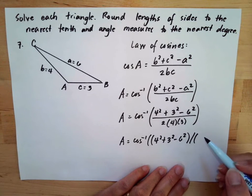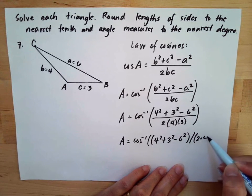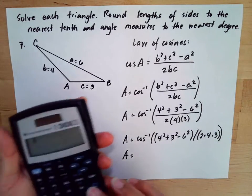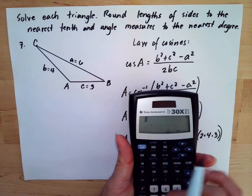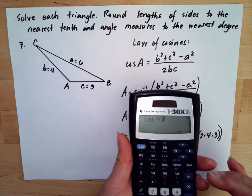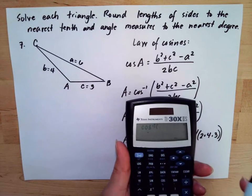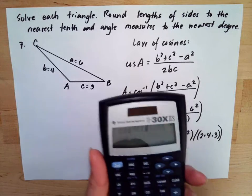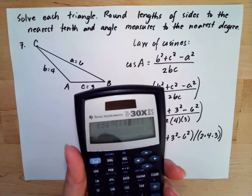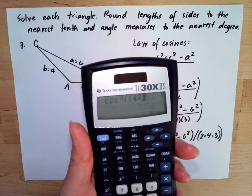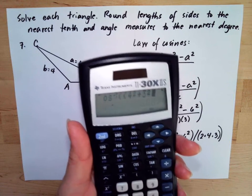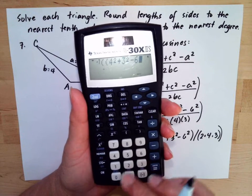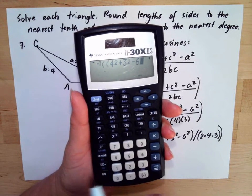Then you have another parenthesis for your denominator. The denominator will be 2 multiplied by 4 multiplied by 3, then close parenthesis. For the numerator, enter 4 squared, plus 3 squared, then minus 6 squared. You hit the squared button for each term — that button is the x-squared key.